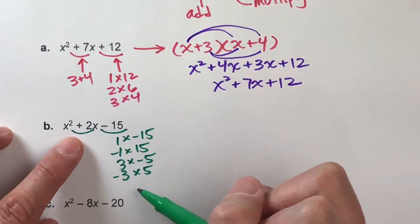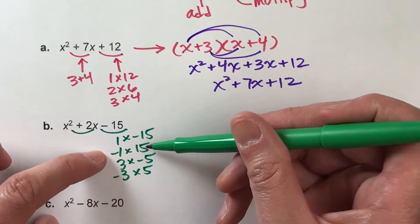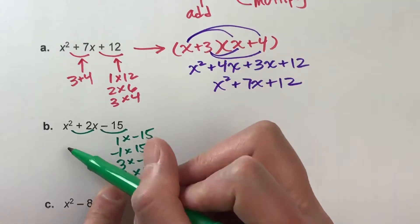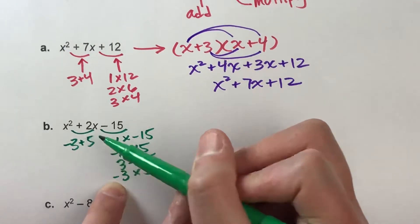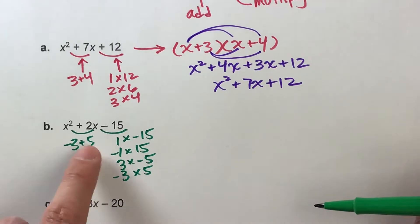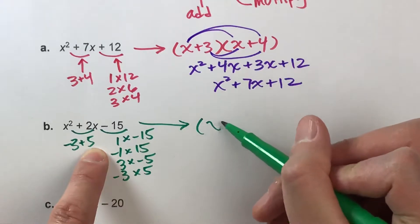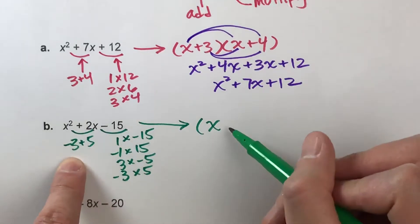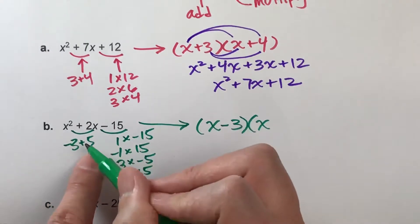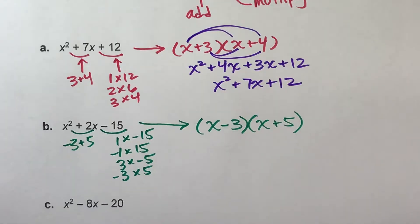Do any of these add up to positive 2? Negative 3 plus positive 5 gives positive 2 — those are our winners. So the factored form is x minus 3, because it's negative 3, times x plus 5, because it's positive 5. There's your factored form.